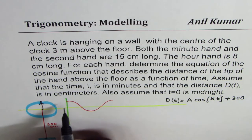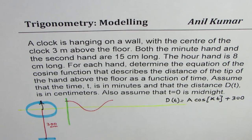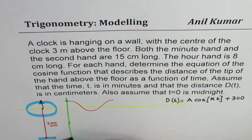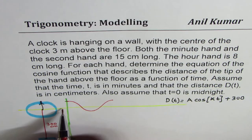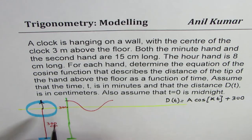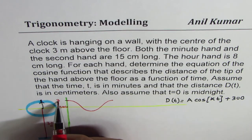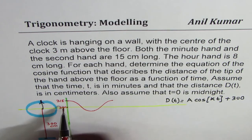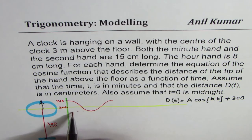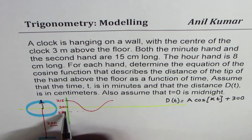The maximum value from the ground, if I see it from the ground, will be what? The center is at 300. So this is 300. For the minute hand, which is 15 centimeters long, this will be 315. And then that will be 300 minus 15, that is 285.